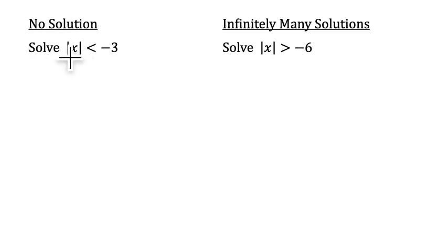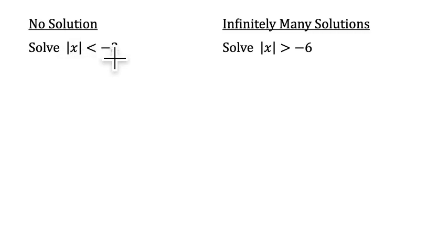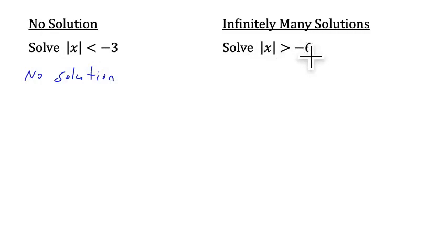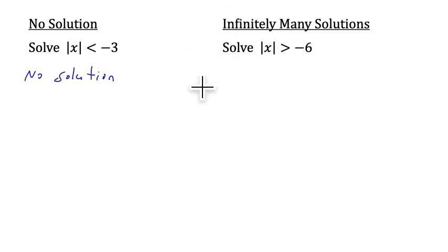A couple of special cases. We can have an absolute value inequality with no solution — like the absolute value of x less than negative 3. The absolute value of a number is always positive, so it's impossible for it to be less than negative 3. So we say 'no solution.' On the other hand, absolute value of x greater than negative 6 is always true, because no matter what number you input — like negative 17 — the absolute value is positive 17, which is greater than negative 6. So there are infinitely many solutions. If an absolute value is less than a negative number, it's no solution. If it's greater than a negative number, it's infinitely many solutions.